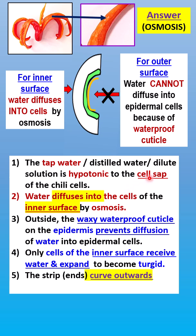You must mention cell sap, because you must compare the tap water to the solution in the cell, which is the cell sap — not just hypotonic to the cell. So the tap water is hypotonic to the cell sap of the chili cells. Other solutions which are hypotonic can be distilled water or any very dilute solution.